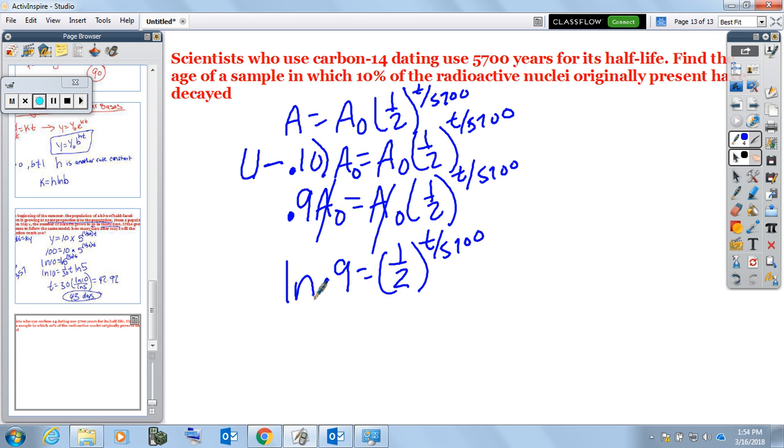We're going to natural log both sides to get the t down. So we'll have natural log of 0.9 equals t over 5,700 times the natural log of one-half, multiplied by 5,700 on both sides to get that fraction out of there.